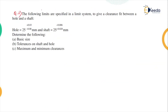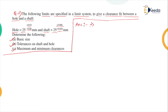The second problem: the following limits are specified in a limit system to give a clearance fit between a hole and shaft. Hole size is 25 with tolerances +0.03 and -0.00, and shaft basic size is 25 mm with tolerances -0.006 and -0.020. We have to determine: the basic size, the tolerances on shaft and hole, and maximum and minimum clearance. First, the basic size is the same for hole and shaft, and it is 25 mm.